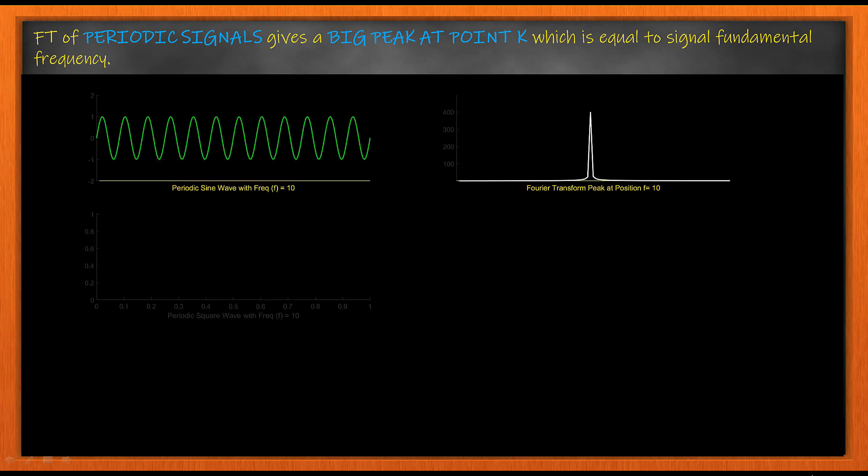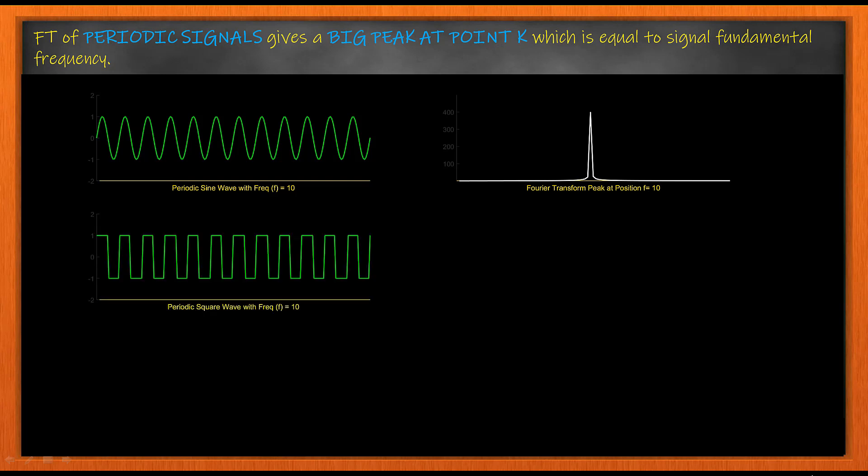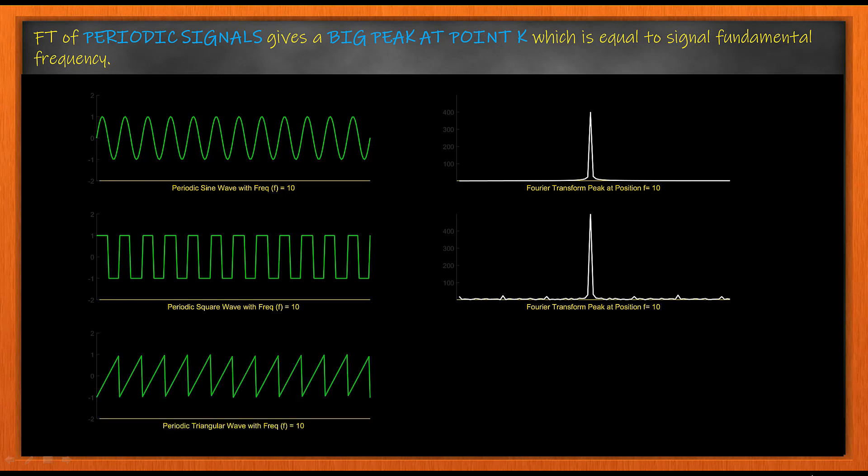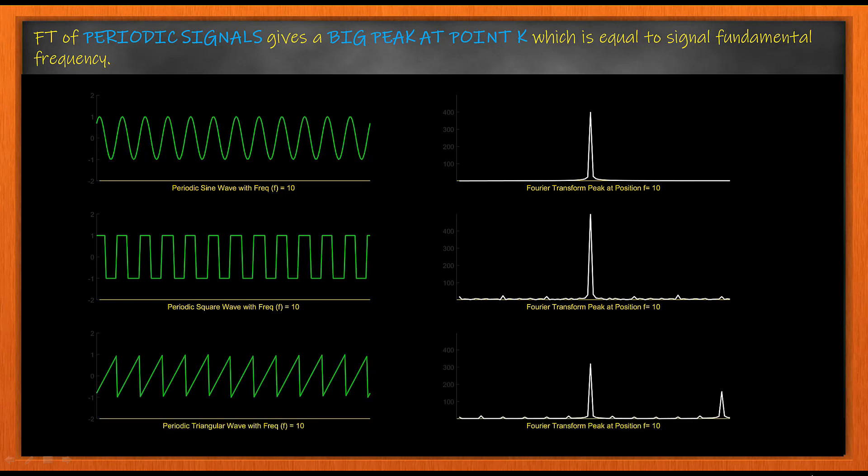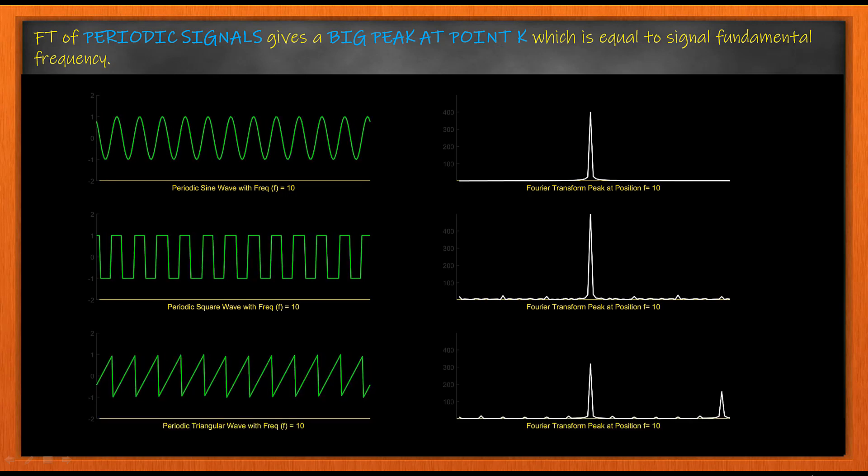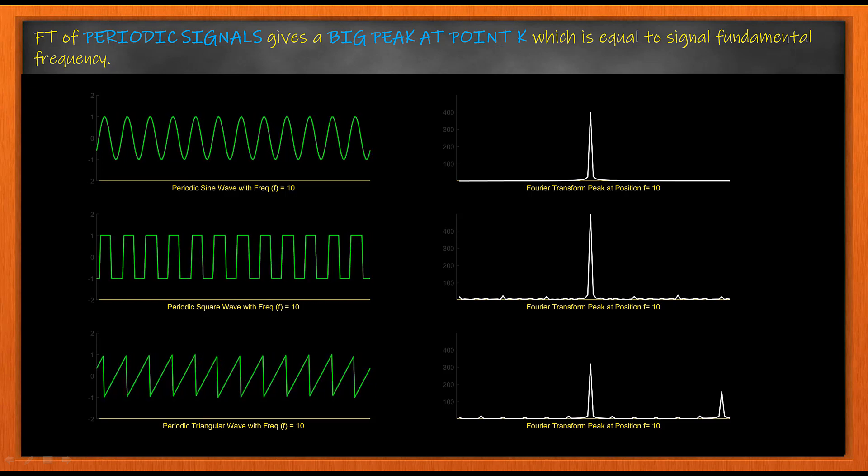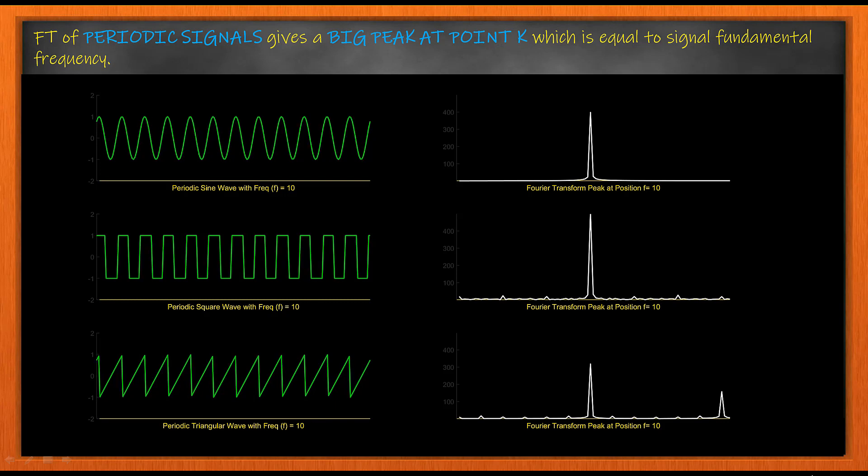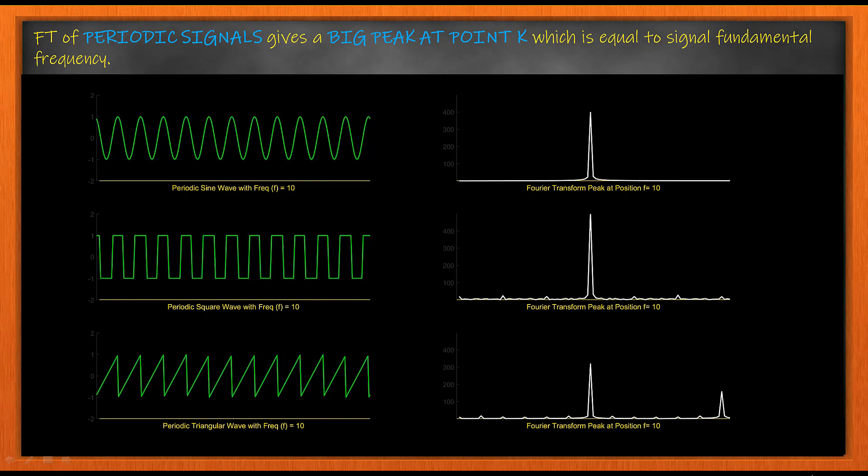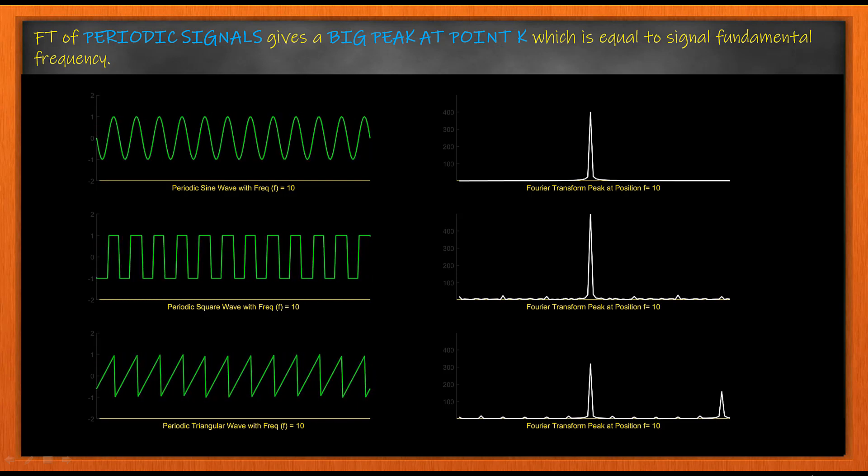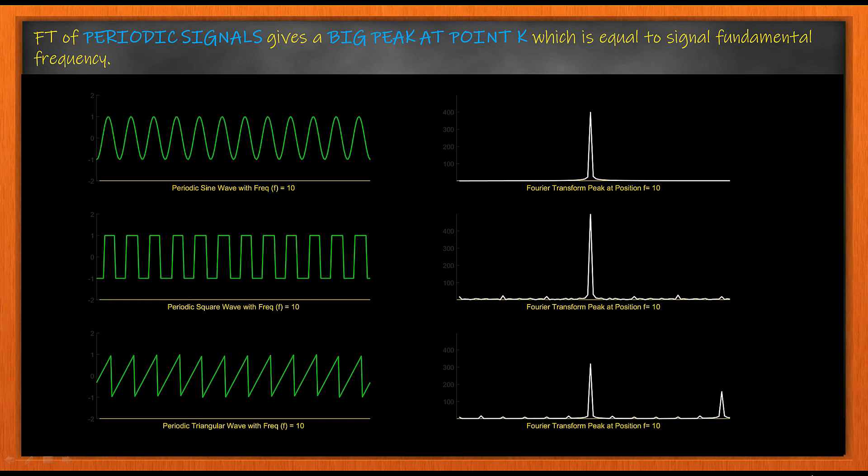So the Fourier transform peak at position f equals 10 is also the frequency of the signal shown on the left hand side. Here we see secondary peaks which represents the secondary frequencies or the harmonics for shapes which are not sine.